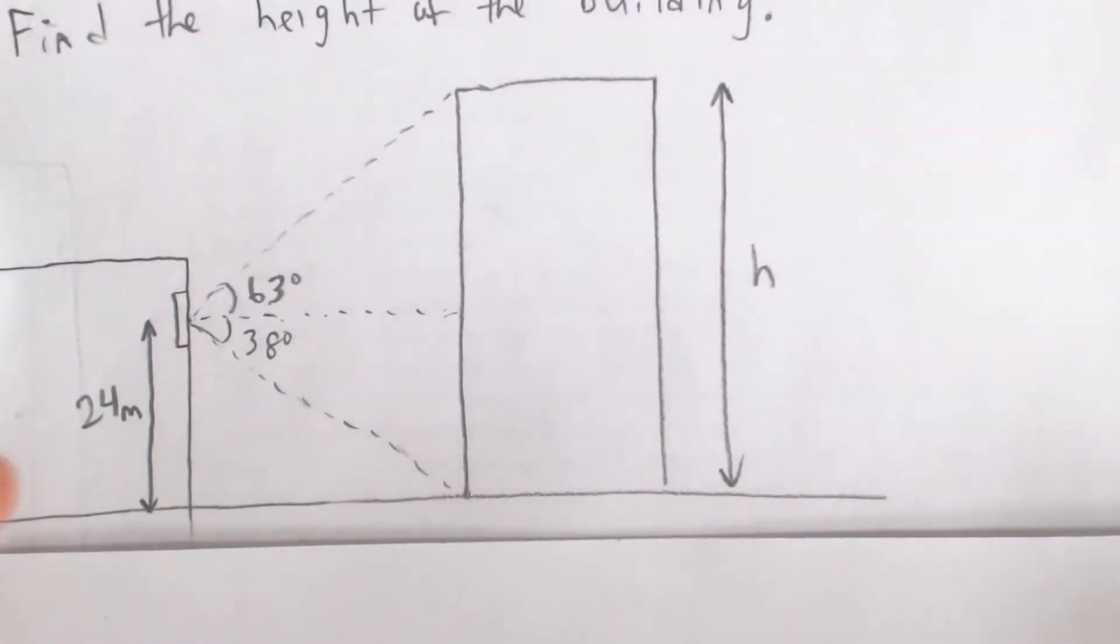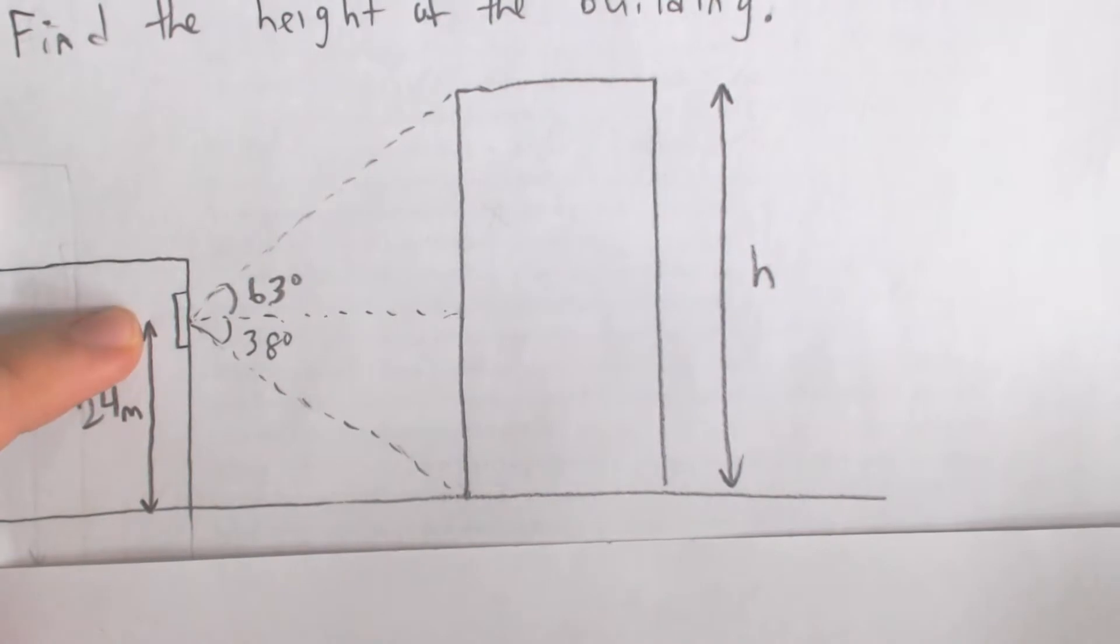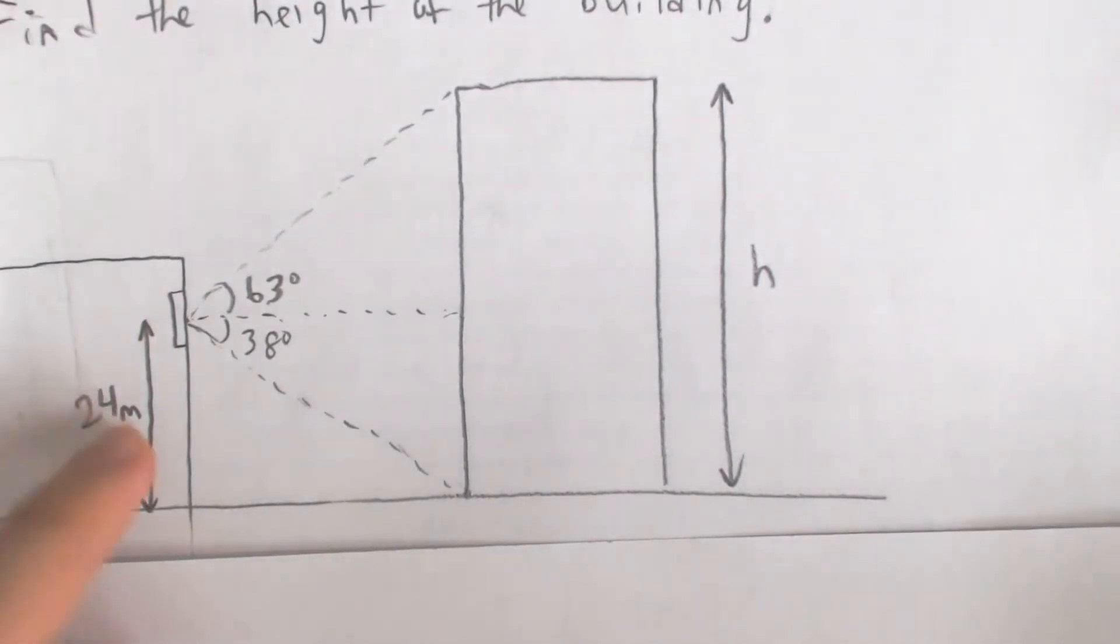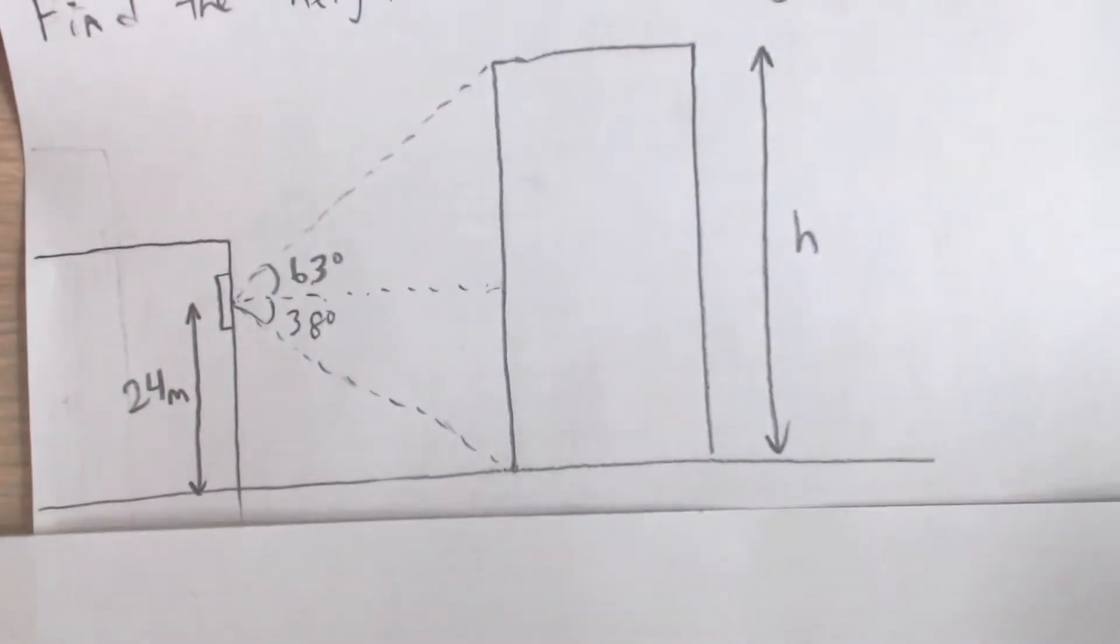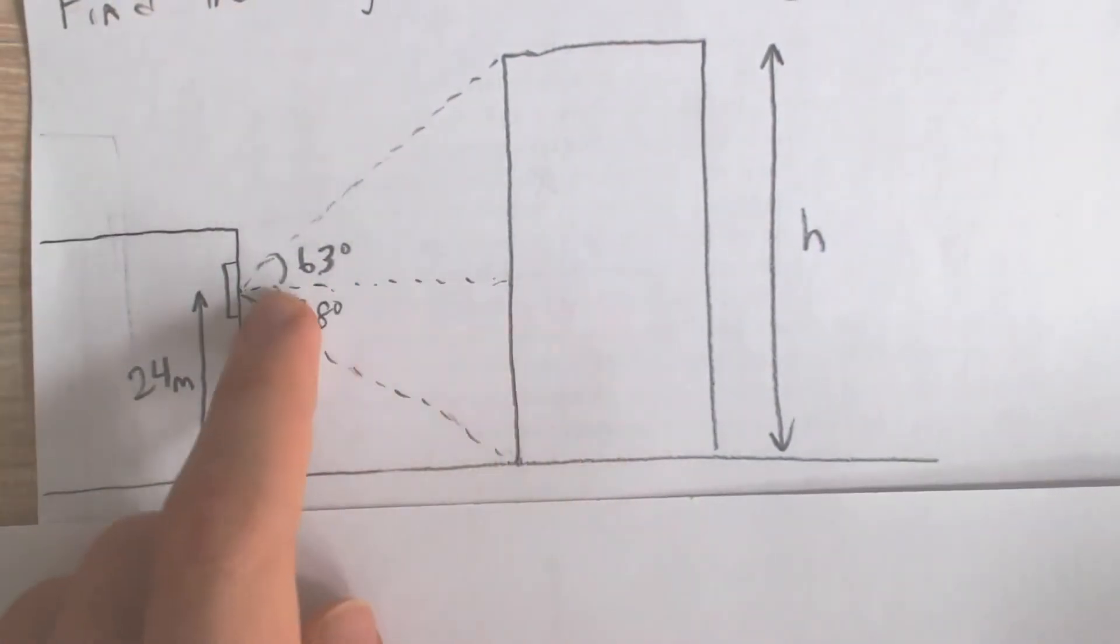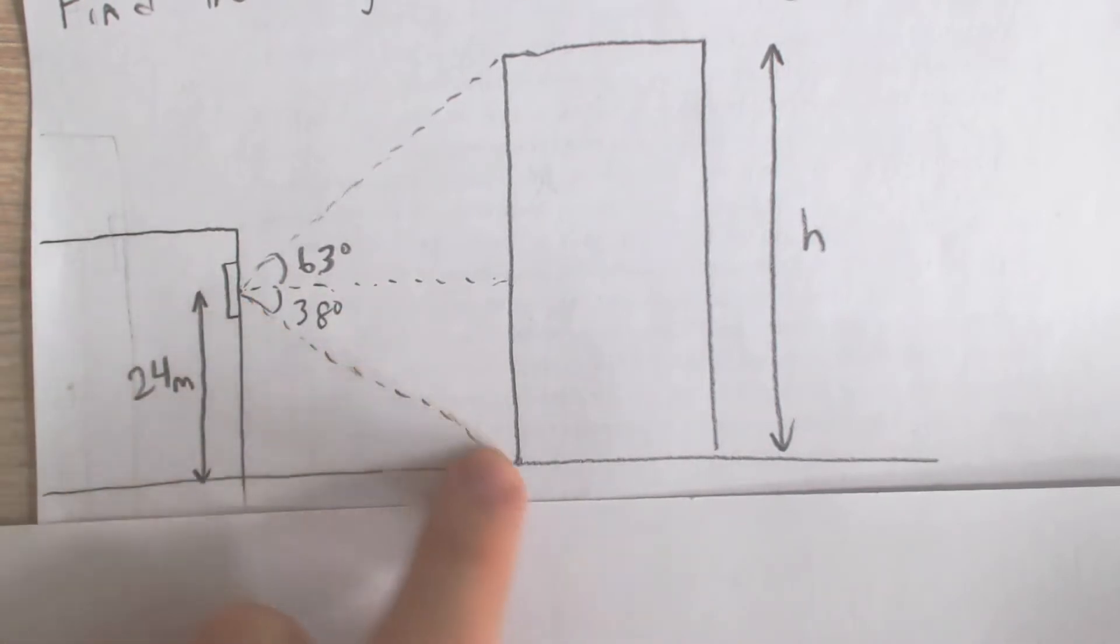So here we go. Here I drew a diagram and you can see here is our window 24 meters above the ground. The angle of depression to the base of a nearby building is 38 degrees. The angle of depression is the angle from the horizontal downwards, so if we draw an imaginary line between here and the base of the building...